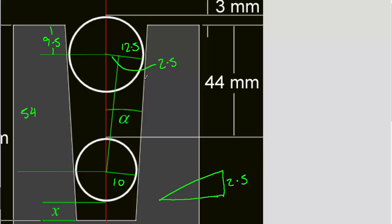So this distance here is going to be 54 minus 9.5, so that's going to be 44.5. And the angle we're looking for there is alpha.